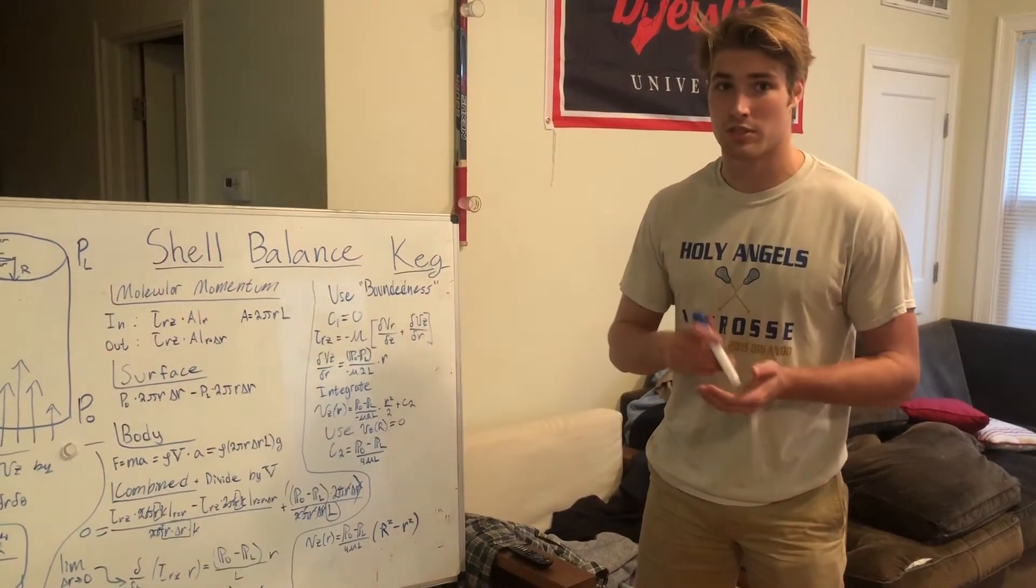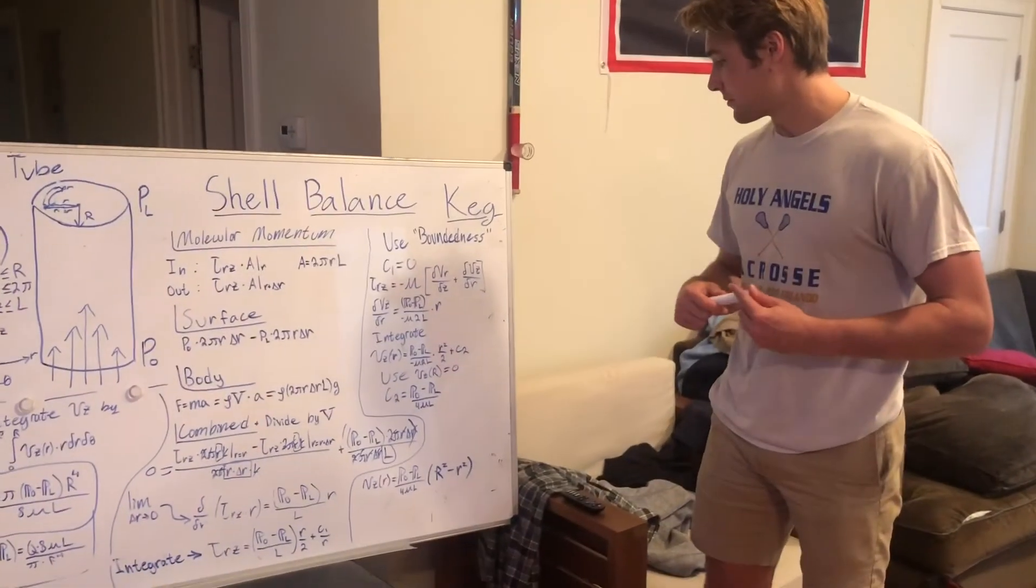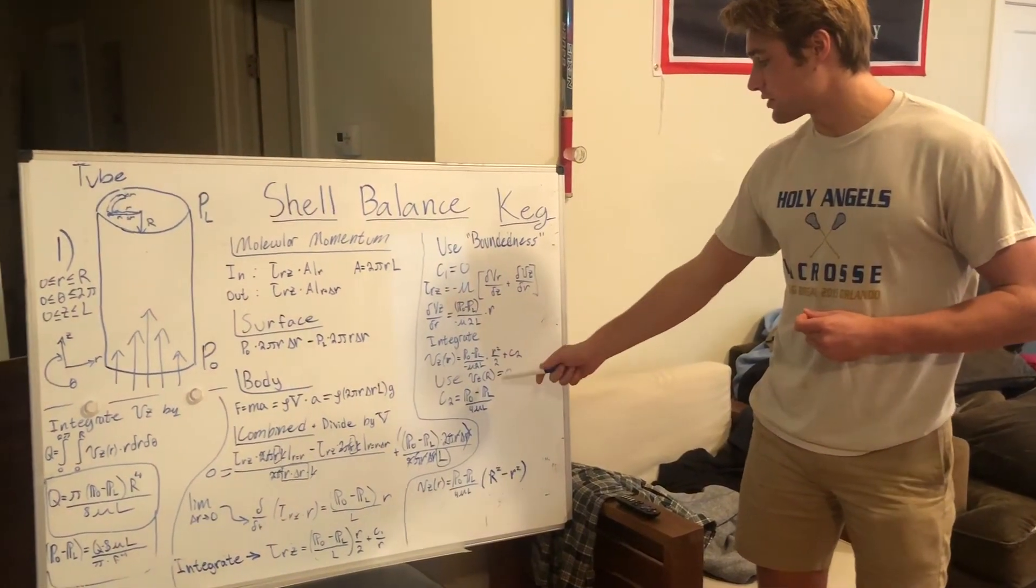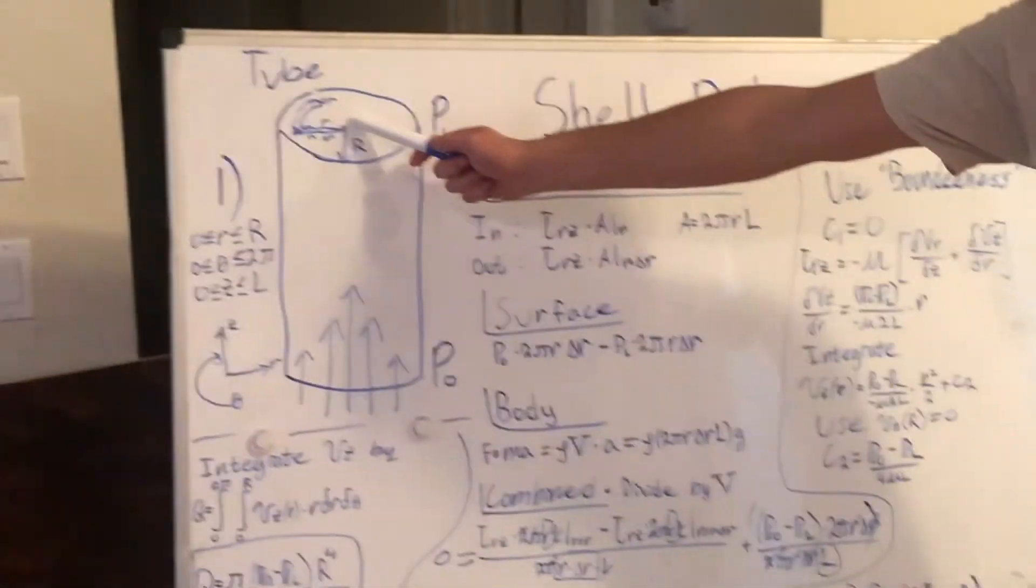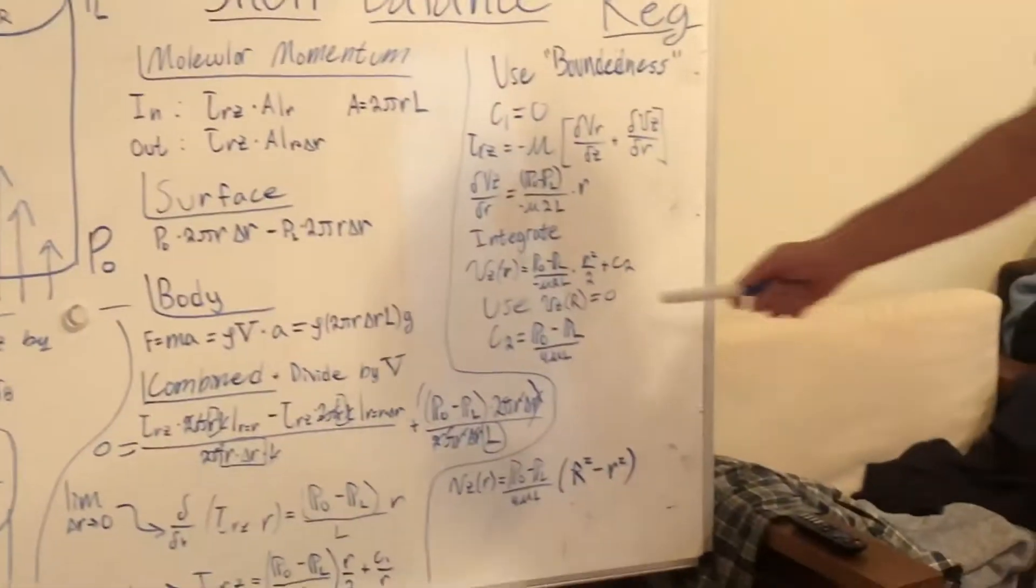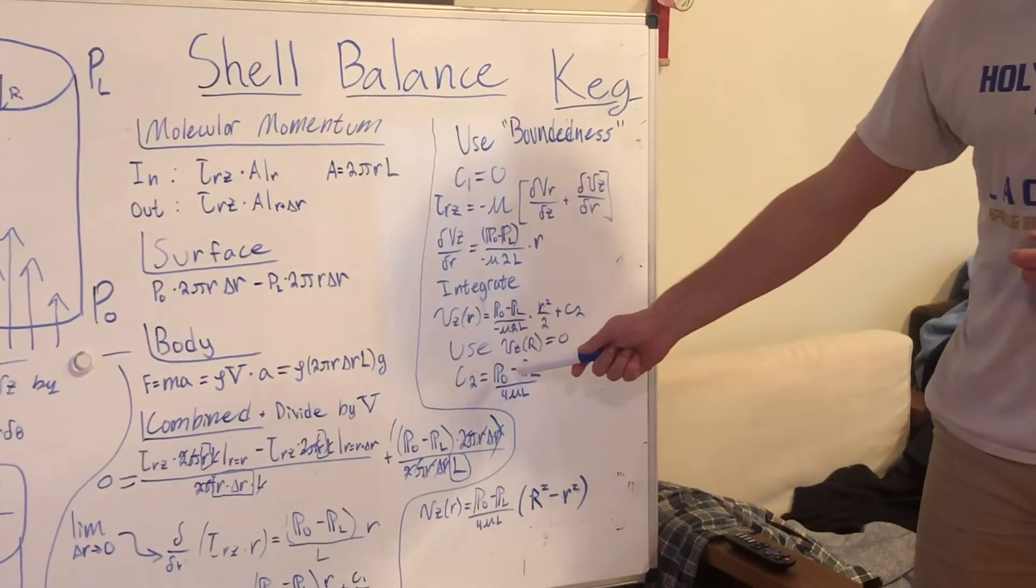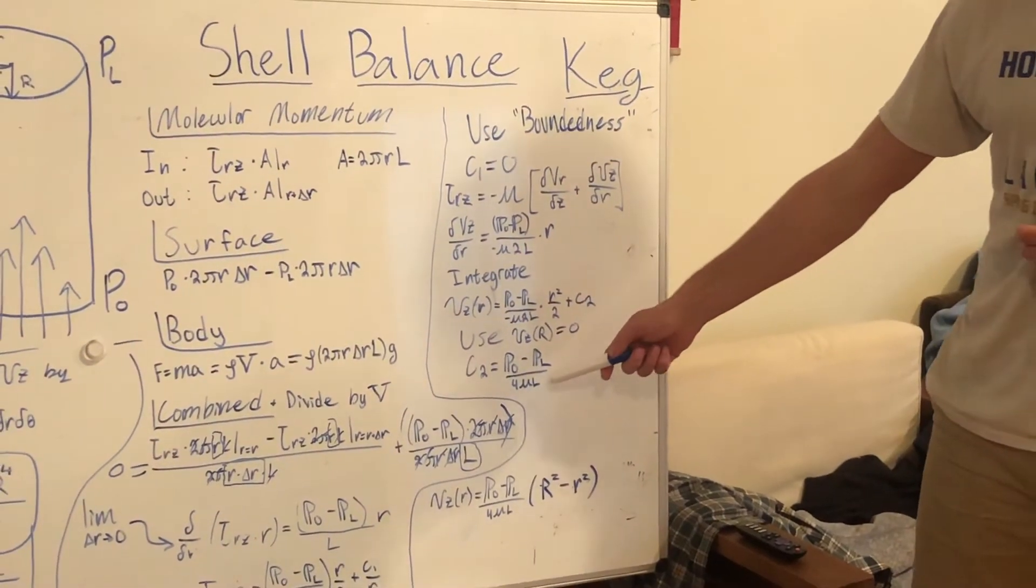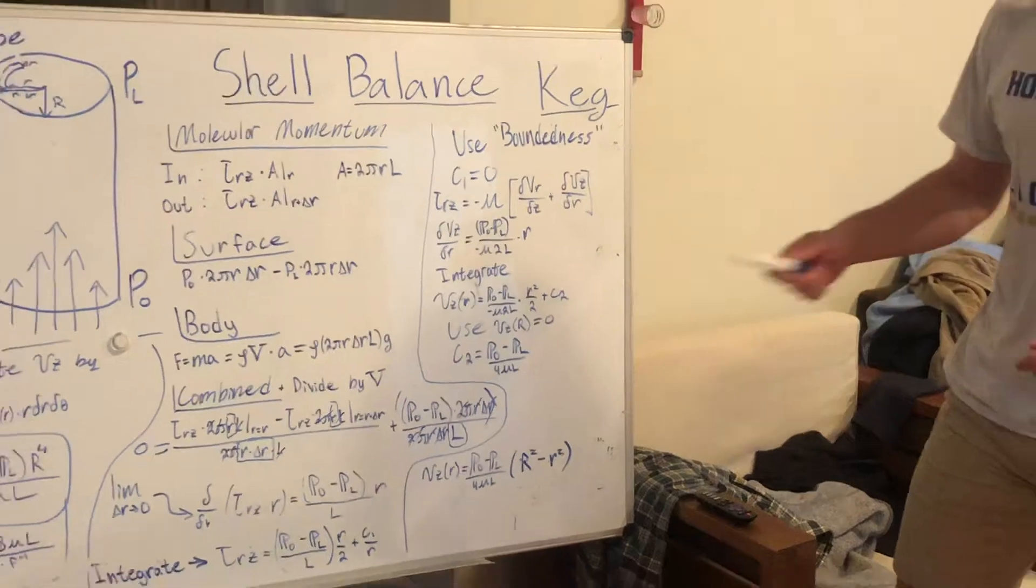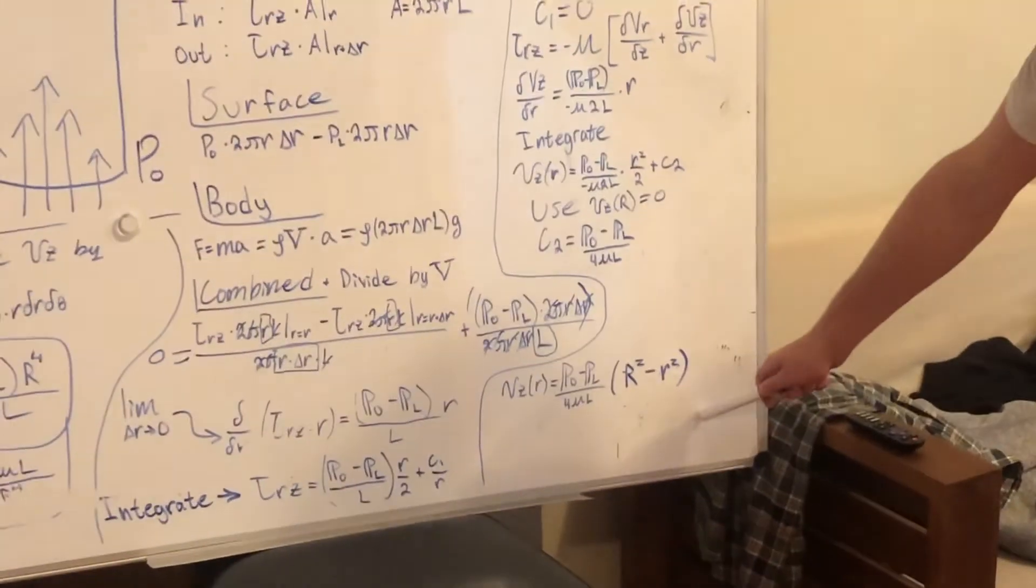And to solve for the second constant, we can use our boundary condition, because it is a Newtonian fluid, so there is no slip at the edges. And this proves that at the edge, at r, the velocity will be 0. So C2 is equal to the pressure differential over 4μL. Now, we have our velocity equation, but how do we find the volumetric flow?